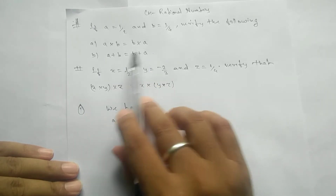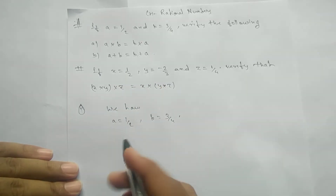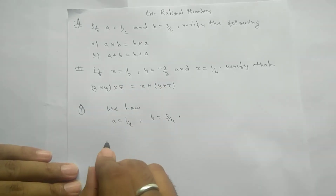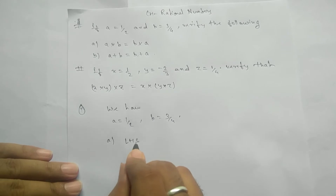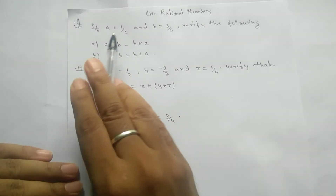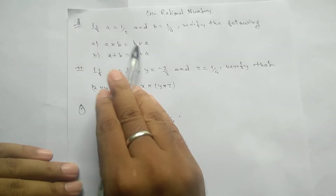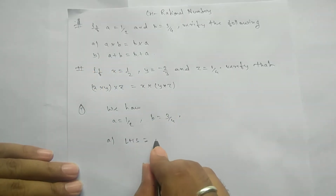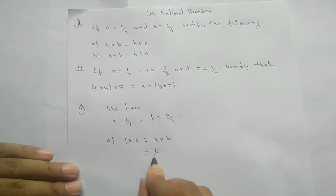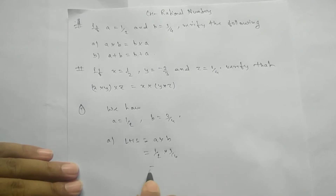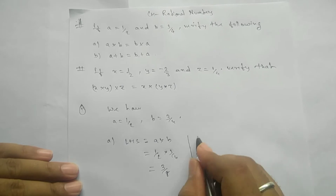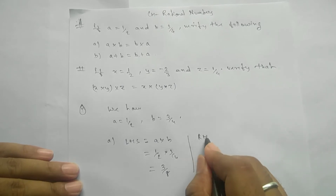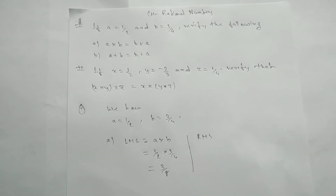For part one, we take LHS — that means the left-hand side — and the right-hand side separately. So for LHS, a into b: we take one by two into three by four, and if we solve it we get three by eight.